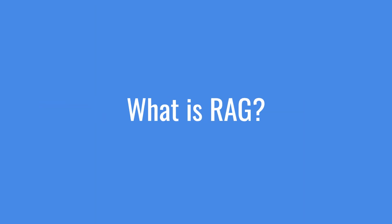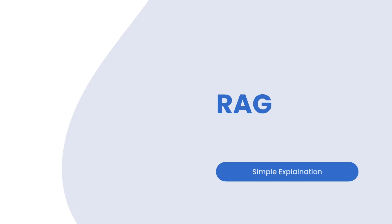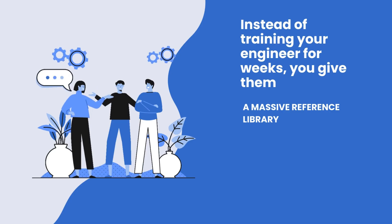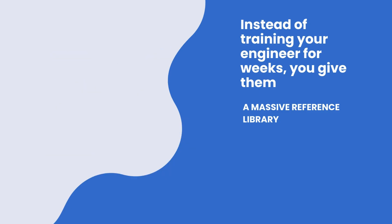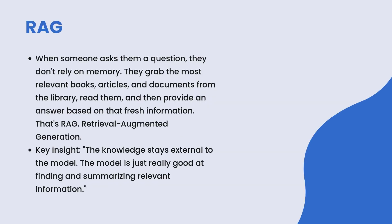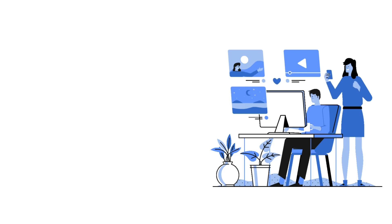What is RAG? Picture a different scenario. Instead of training your engineer for weeks, you give them a massive reference library. When someone asks them a question, they don't rely on memory — they grab the most relevant books, articles, and documents from the library, read them, and provide an answer based on that fresh information. That's RAG — Retrieval Augmented Generation. Instead of training the model, you're giving it access to a knowledge base. When it needs to answer a question, it first retrieves the relevant information, then generates a response based on that retrieved data. Key insight: the knowledge stays external to the model — the model is just really good at finding and summarizing relevant information.